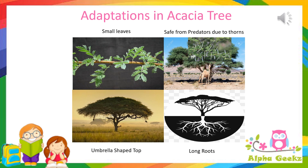In the acacia tree, the adaptations it has developed to survive in desert regions are: first, the trees have small leaves to prevent water loss through transpiration. These trees have thorns to protect themselves from enemies eating their leaves. They have long roots to collect underground water, and they have an umbrella-shaped top to collect as much sunlight as possible for photosynthesis.